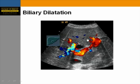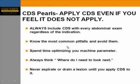For biliary dilatation, apply color Doppler — any cystic structure not filling with color that follows an anatomic course is most likely a bile duct.